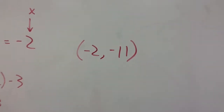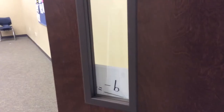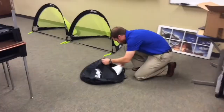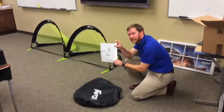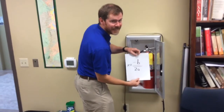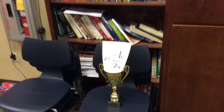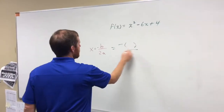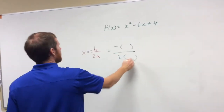Negative b over 2a — that's the x value of the vertex. Now substitute this in your function, and you'll find the y value next.